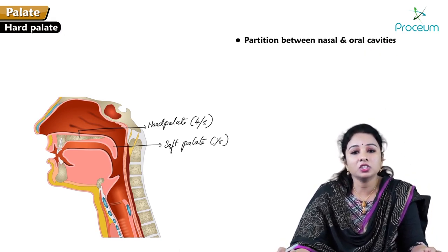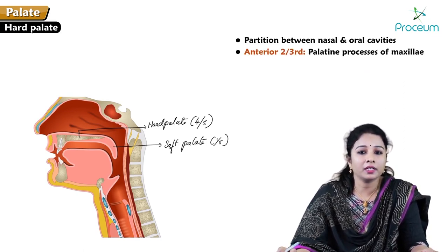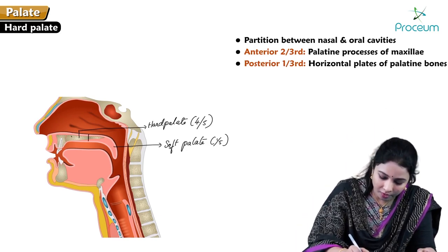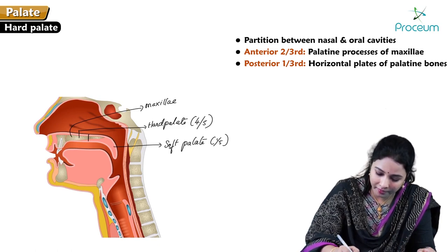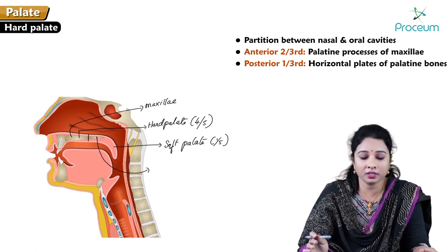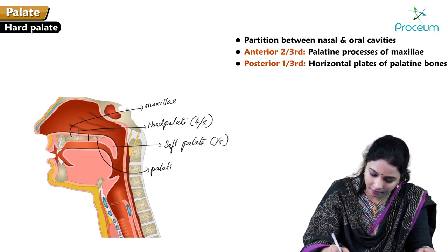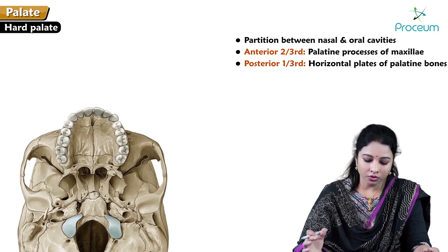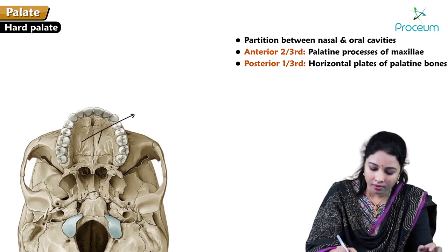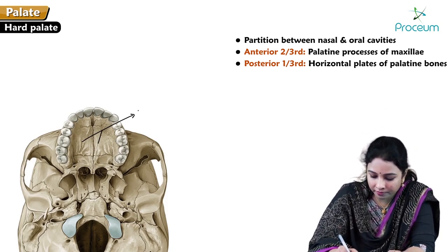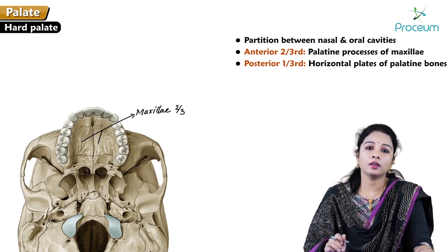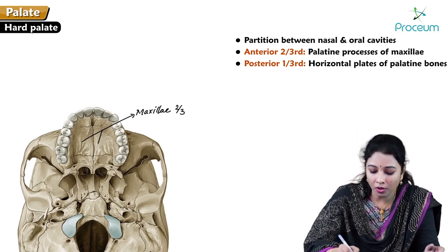The hard palate is the partition between the nasal and oral cavities. Its anterior two-thirds is formed by the palatine process of the maxillae, and the posterior one-third is formed by the horizontal plates of the palatine bones. Here is the inferior surface of the skull showing the hard palate — the palatine processes of the right and left maxillae make up the anterior two-thirds, and the horizontal plates of the palatine bones form the posterior one-third.